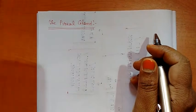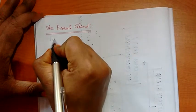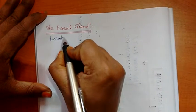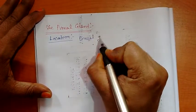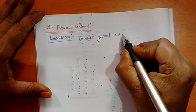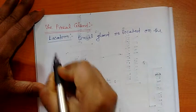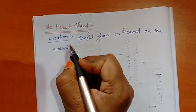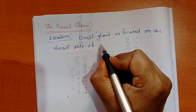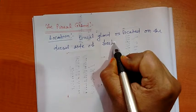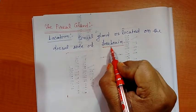Pineal gland is located on the dorsal side of core brain. First, location. Pineal gland is located on the dorsal side of core brain.